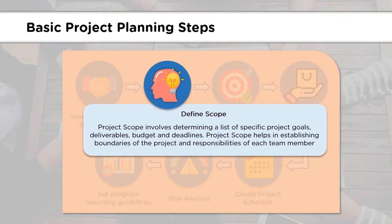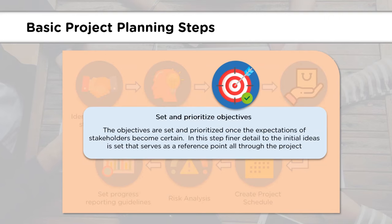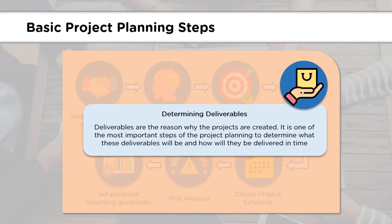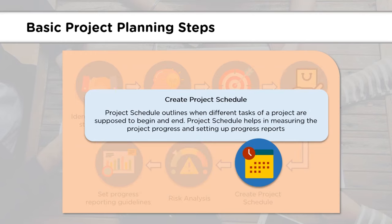Defining the project scope helps in determining a list of specific project goals and deliverables to be achieved during the course of the project. After defining the scope, it is time to set project objectives and prioritize them. The initial ideas are elaborated and final steps to complete the project are defined. In the next step, the deliverables are determined — after all, project deliverables are the reason the project is being created. This involves finding out what the deliverables will be and the deadlines for their delivery.